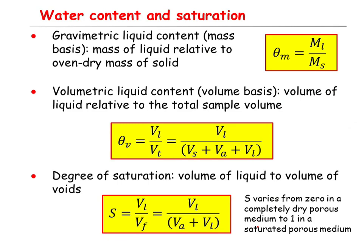Another definition is gravimetric water content, defined as the mass of the liquid — or mass of water if your liquid is water — related to the oven-dry mass of solid. So theta m, the gravimetric liquid content, equals the mass of the liquid phase ml divided by the mass of the dry solid phase ms.